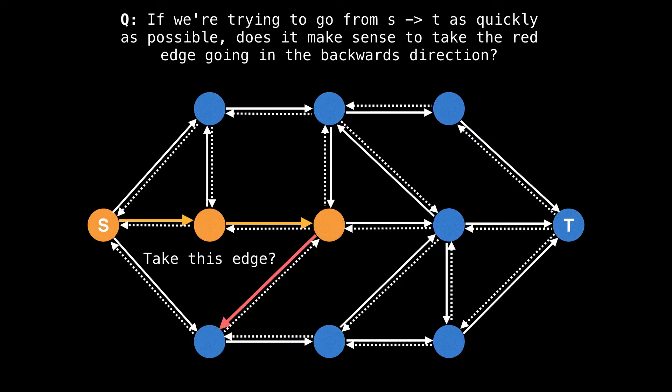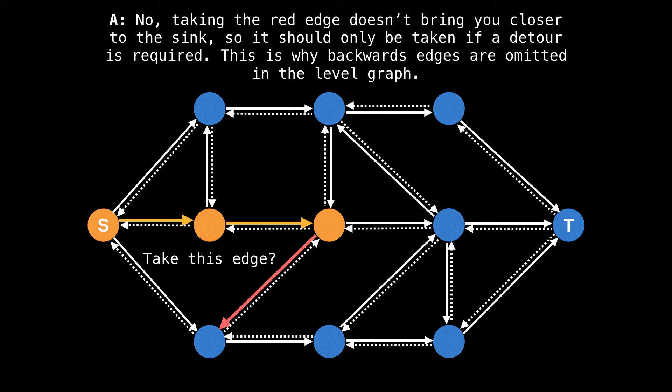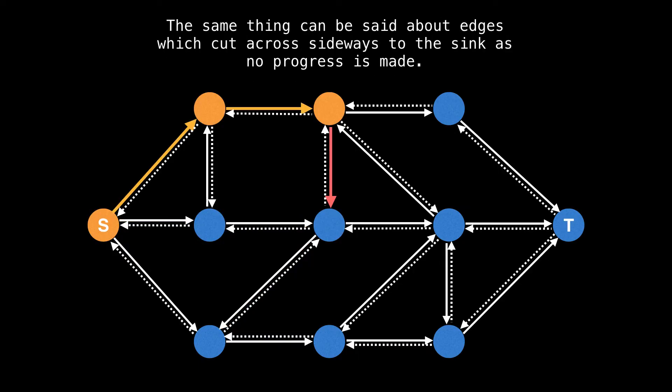So ask yourself, if you're trying to get from s to t as quickly as possible, does it make sense to take the red edge going in the backwards direction on the slide? No, taking the red edge doesn't bring you any closer to the sink. So it should only be taken if a detour is required. This is why backwards edges are omitted from the level graph. The same thing can be said about edges which cut across sideways across the same level since no progress is made.